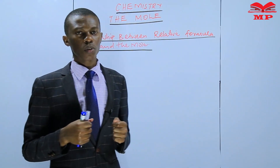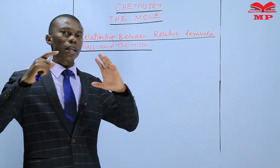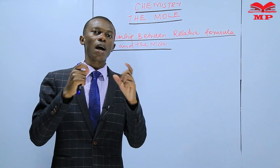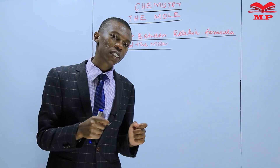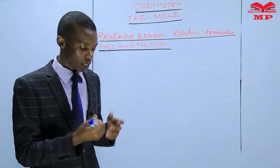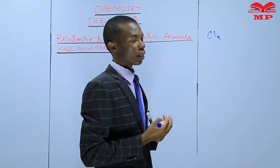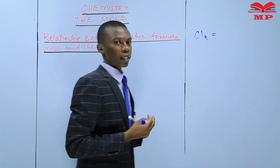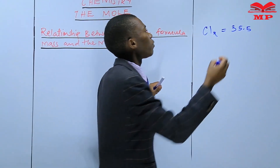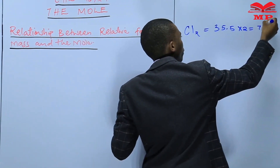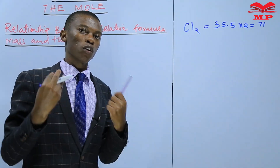If you remember, in the previous lesson, we were discussing the relationship between the relative molecular mass and the mole. We said that the relative molecular mass is the sum of the relative atomic masses of the atoms in a molecule of an element or compound. We gave the example of chlorine, where the mass of a single atom of chlorine is 35.5, so the relative molecular mass of chlorine gas is 35.5 times 2, which is 71.